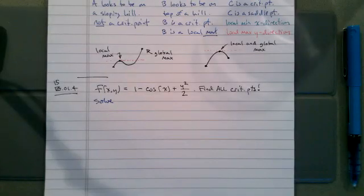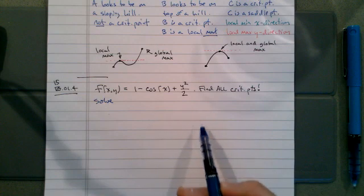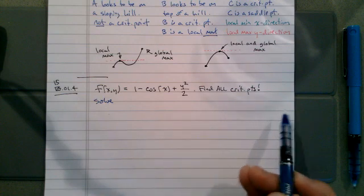In problem four we want to find all the critical points of this function. The reason that we're emphasizing all and that our choices look like these long lists, these infinitely long lists of numbers, is that our cosine of x function, our function in the x-direction, is going to have infinitely many maximums and minimums.